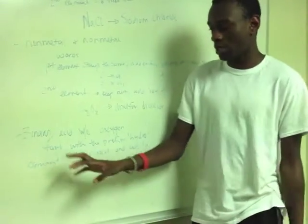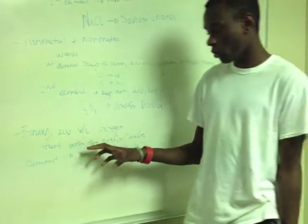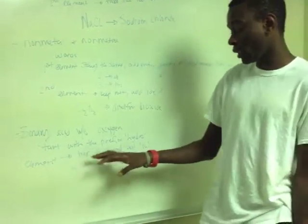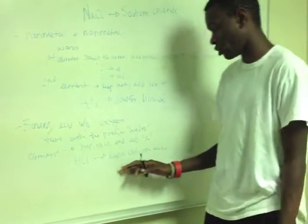The third type is a binary acid without oxygen. You start with the prefix 'hydro', then take the element's root word and add 'ic'. So HCl would be hydrochloric acid.